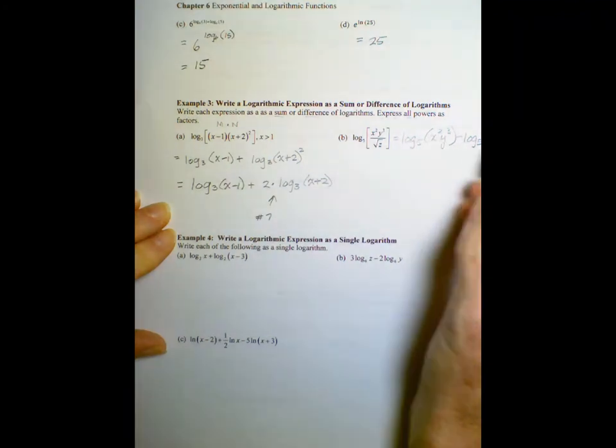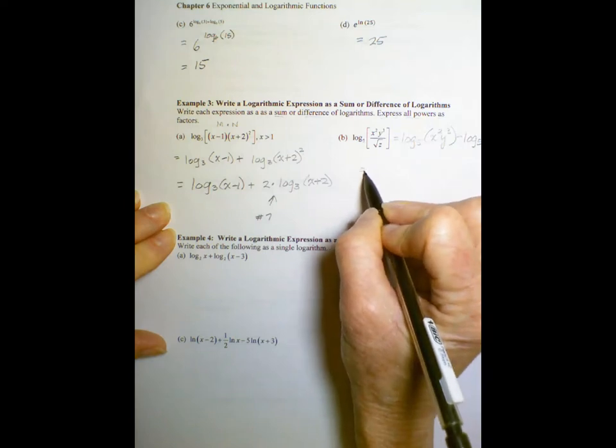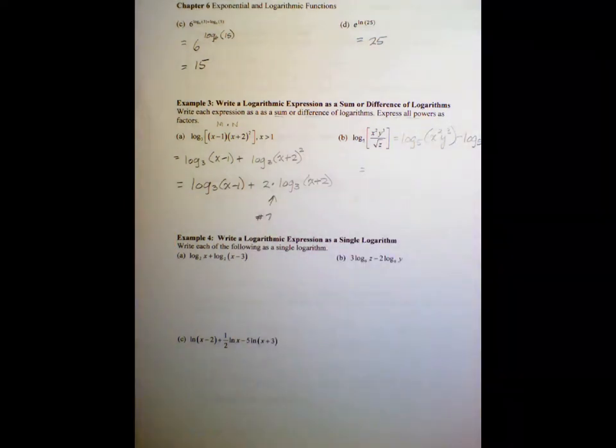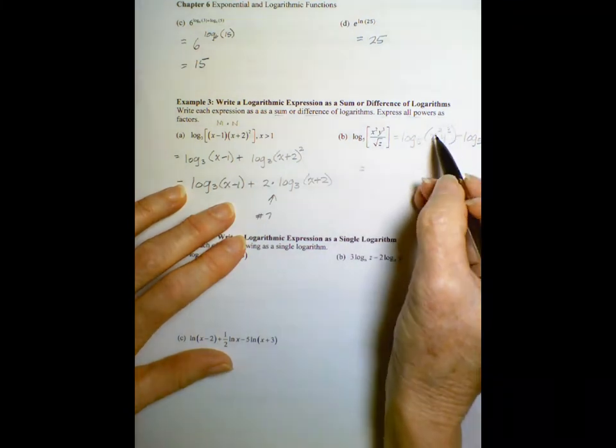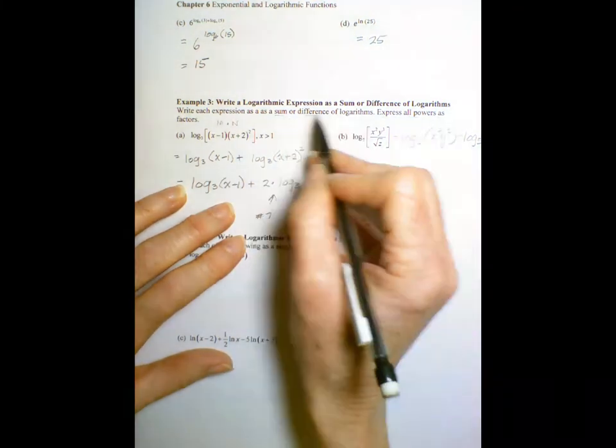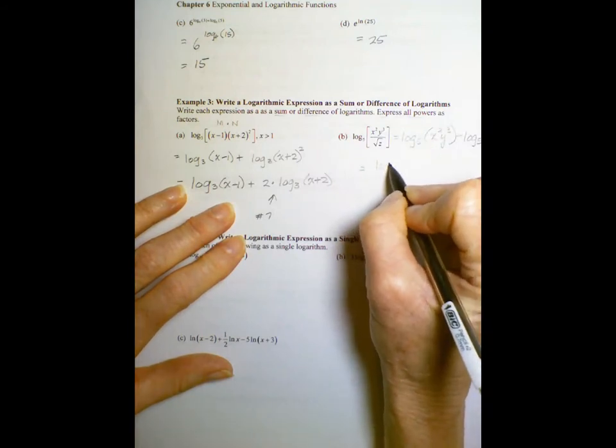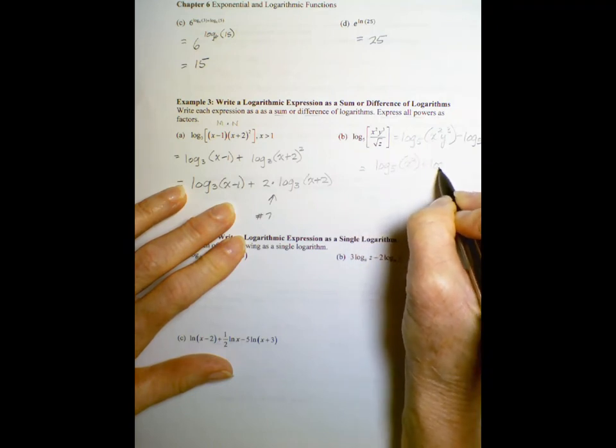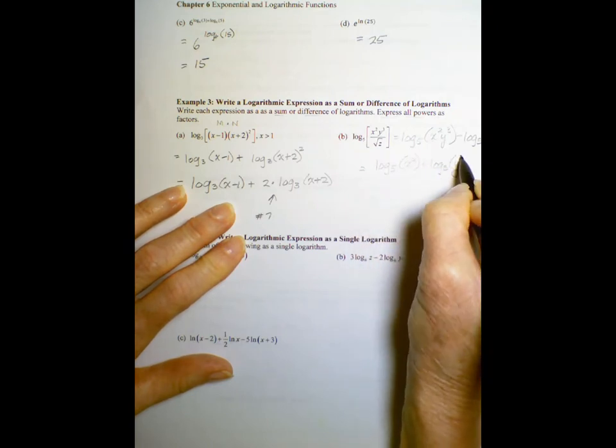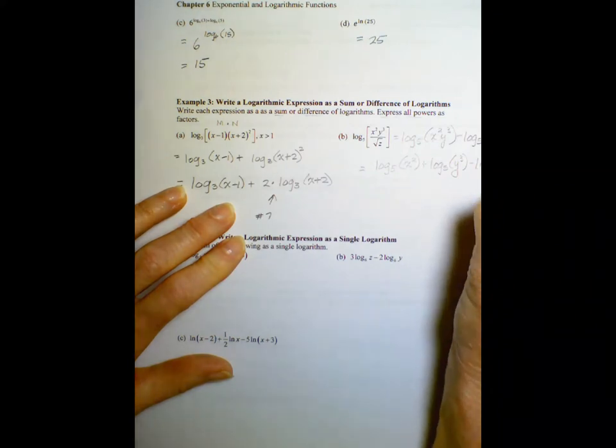I would be done, but look, I still have an m times n right here, so I haven't completely broken this down into sums and differences. So this will be the log base 5 of x squared plus the log base 5 of y cubed minus the log base 5 of z to the 1 half.